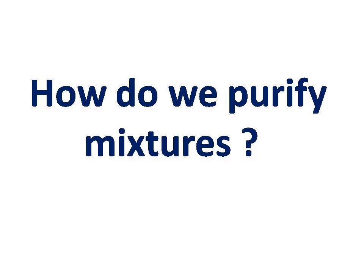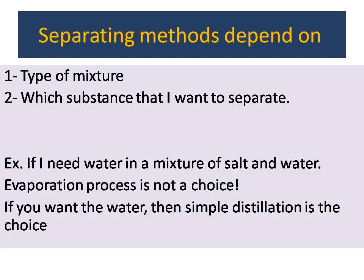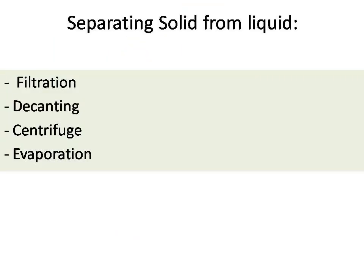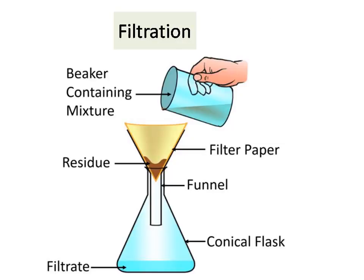Now we're going to learn separating methods used to separate mixtures into their components. When you want to separate any mixture, the separating method depends on the type of mixture and the substance you want to separate. If you want to separate a solid substance from liquid, we have techniques like filtration, decanting, centrifuge, and evaporation.